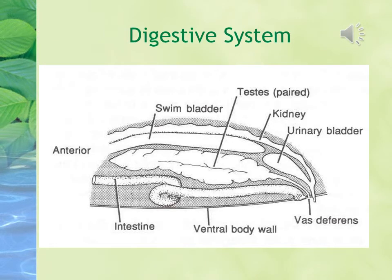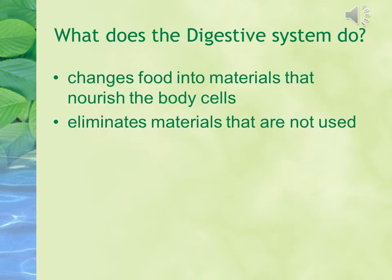The next is the digestive system. This diagram of the fish digestive system shows organs including the swim bladder, testes, kidney, urinary bladder, vas deferens, ventral body wall, and intestine. The digestive system changes food into materials that nourish the body cells. It also eliminates materials that are not used in the body.